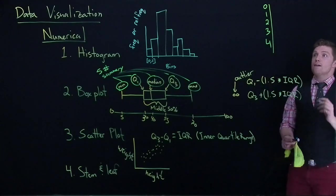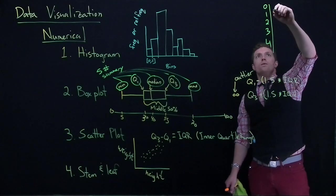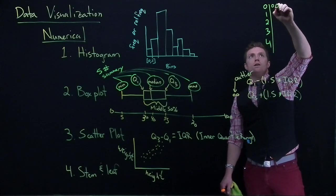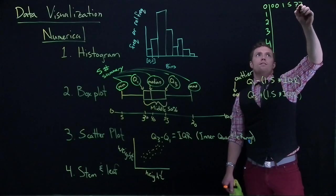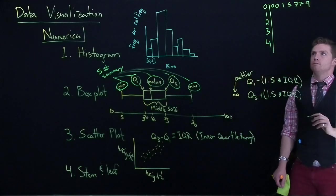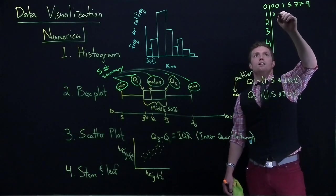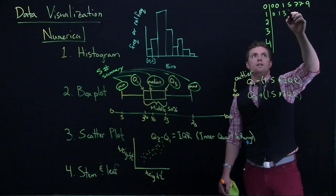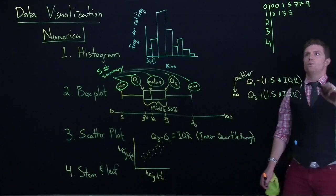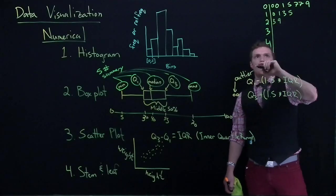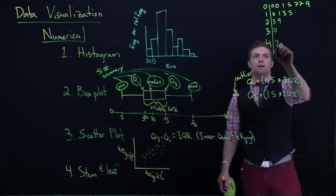So, now what you do is for every single observation, you put in its numerical values. So, I had two zeros, I had a one, I had a five, and two sevens, and a nine. All right, then the people who had one, there's somebody who had 10, who had 11, 13, and 15. For 20, we had 23 and 29. 30, we had 30, and 40, we had 47.